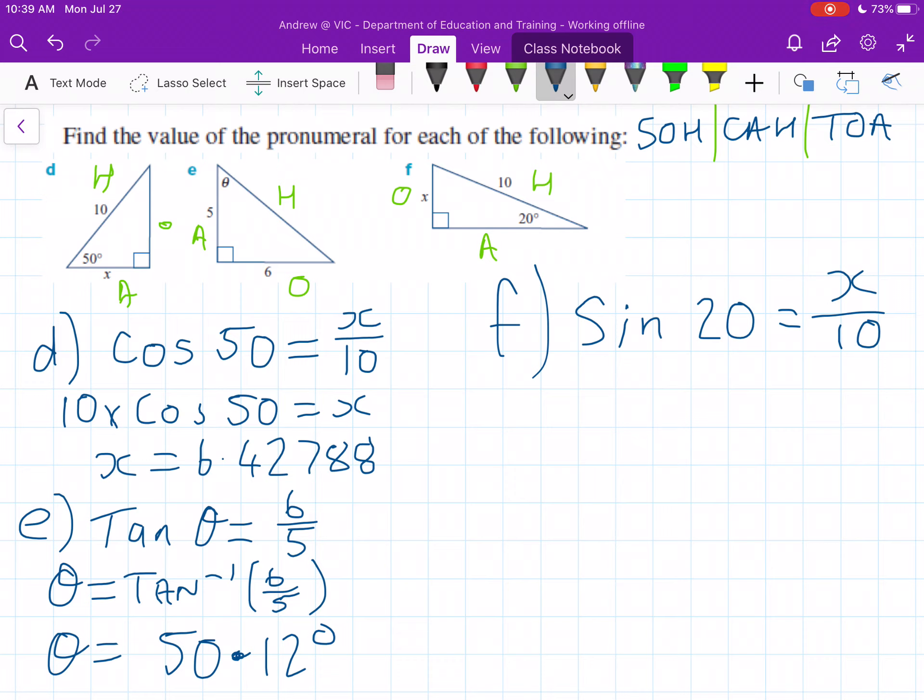So x is equal to 10 times sine 20. Make sure your calculator is in degrees because we're working with a degree, not a radian here. So here this should give you an answer of 3.4202.